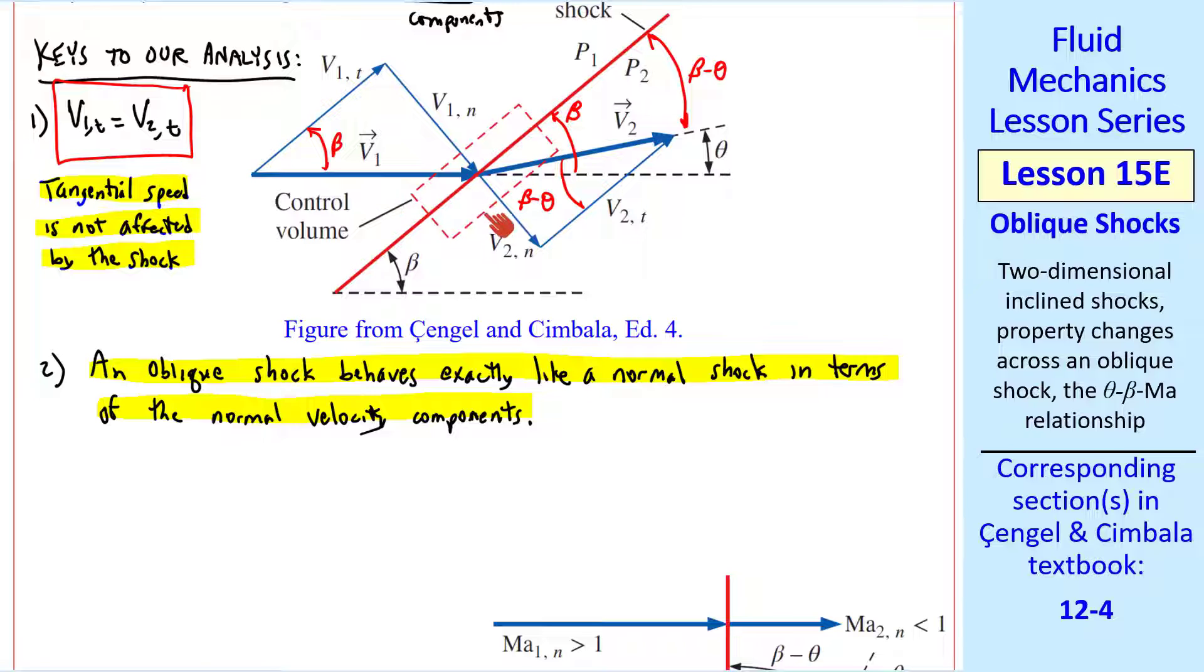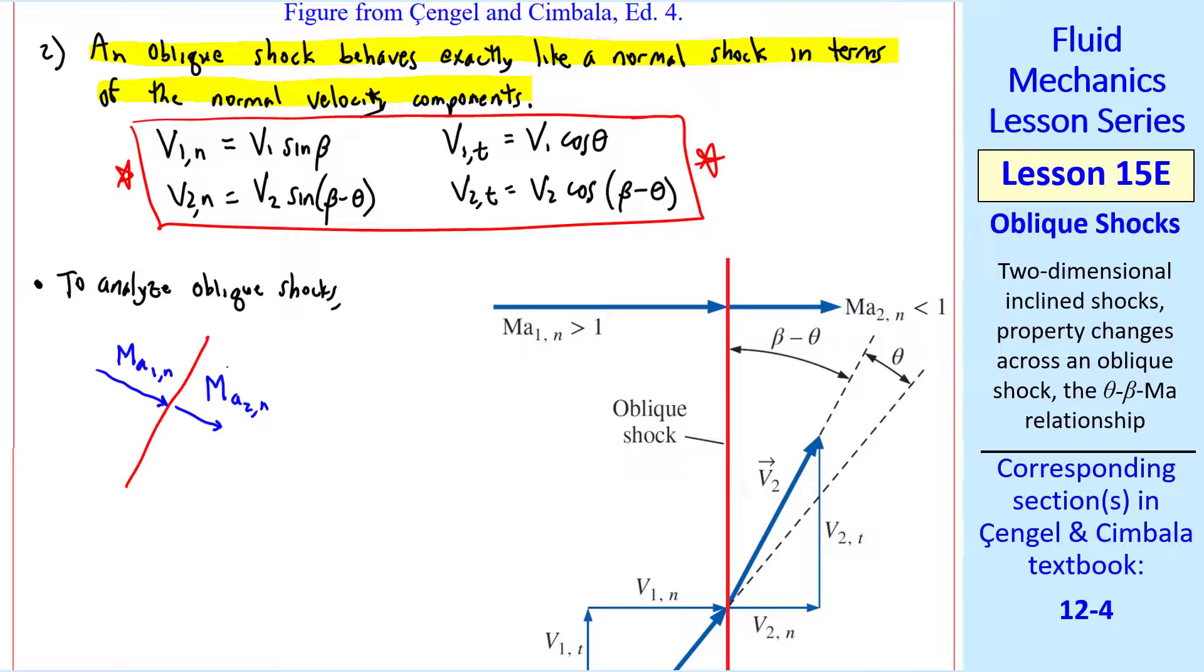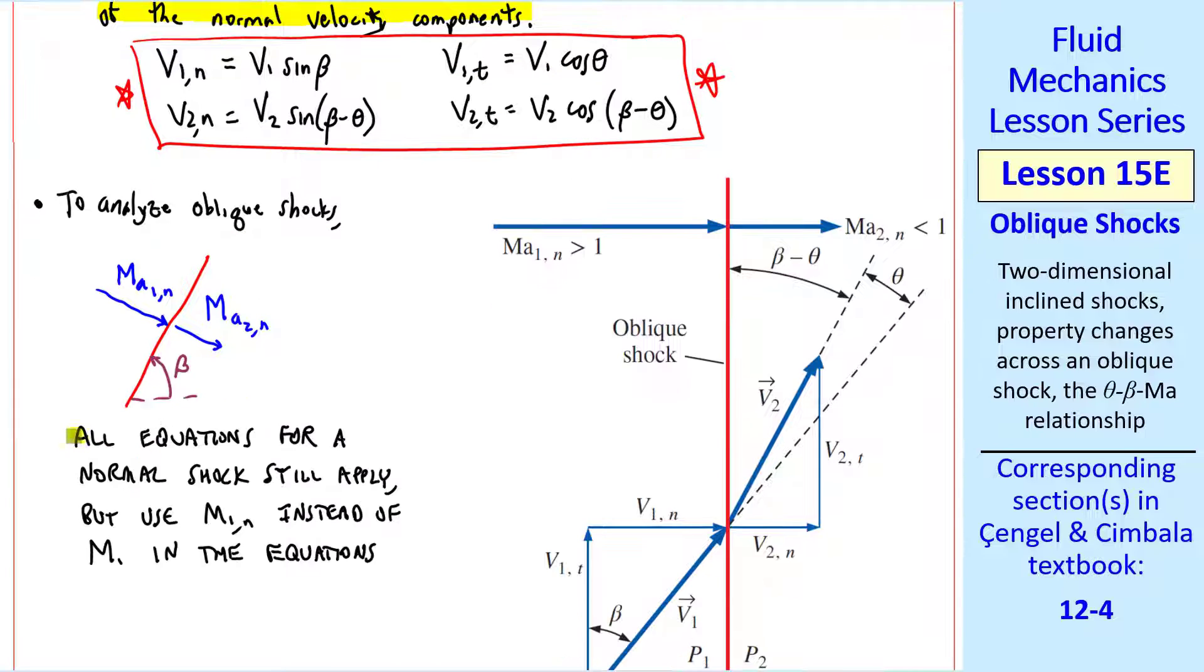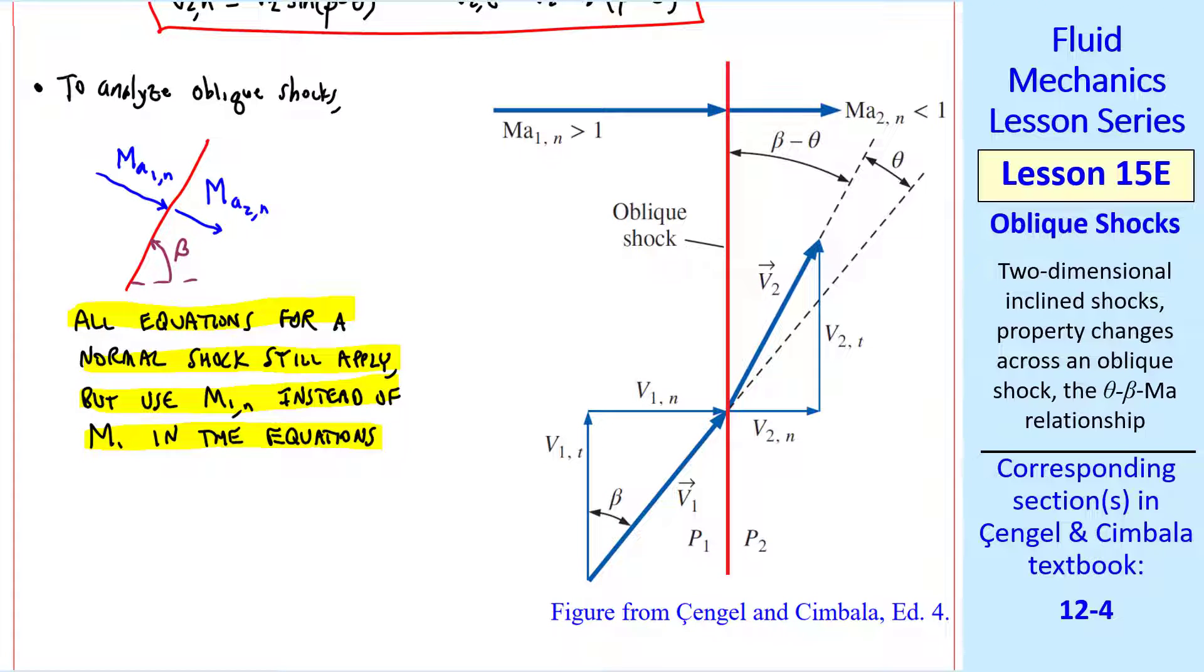Doing a little trig with this diagram, normal velocity component V1n is the magnitude V1 times sine beta, and tangential component V1t is V1 cosine beta. Similarly, V2n is V2 times the sine of beta minus theta, and V2t is V2 times cosine beta minus theta. To analyze oblique shocks, we care about the normal component of Mach number and analyze it as a normal shock. All equations for a normal shock still apply, but we use M1n instead of M1 in the equations.